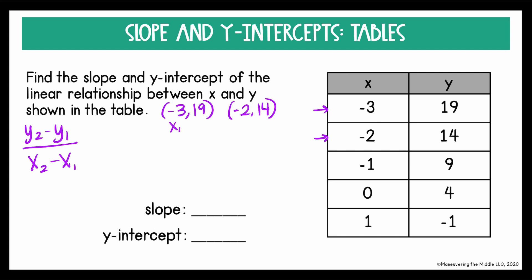I'm going to label these x1, y1, and x2, y2. So now I'm ready to substitute these into the formula, y2 minus y1 over x2 minus x1. 14 minus 19 is negative 5. Negative 2 minus negative 3 is 1. So this simplifies to negative 5. The slope is negative 5.